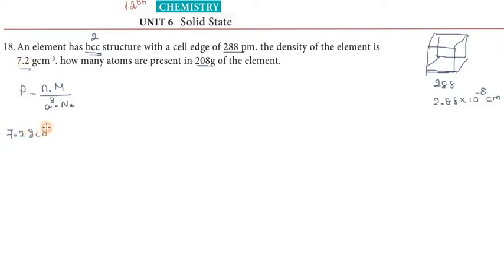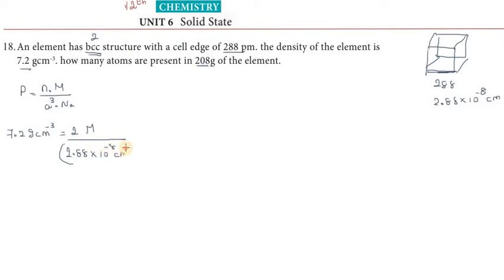Substituting values: 7.2 g/cm³ = (2 × M) / ((2.88 × 10⁻⁸ cm)³ × 6.023 × 10²³). Now we compute the cube of the edge length: (2.88 × 10⁻⁸)³.